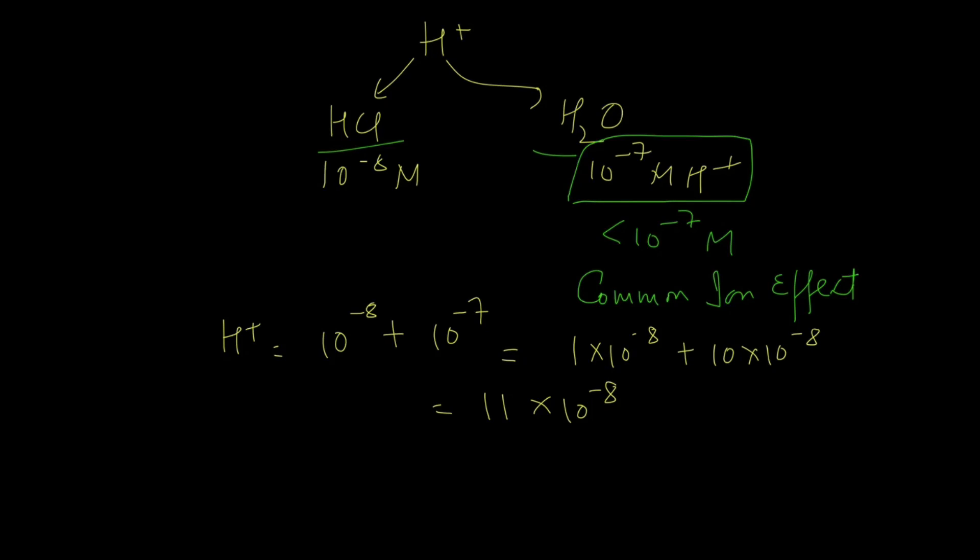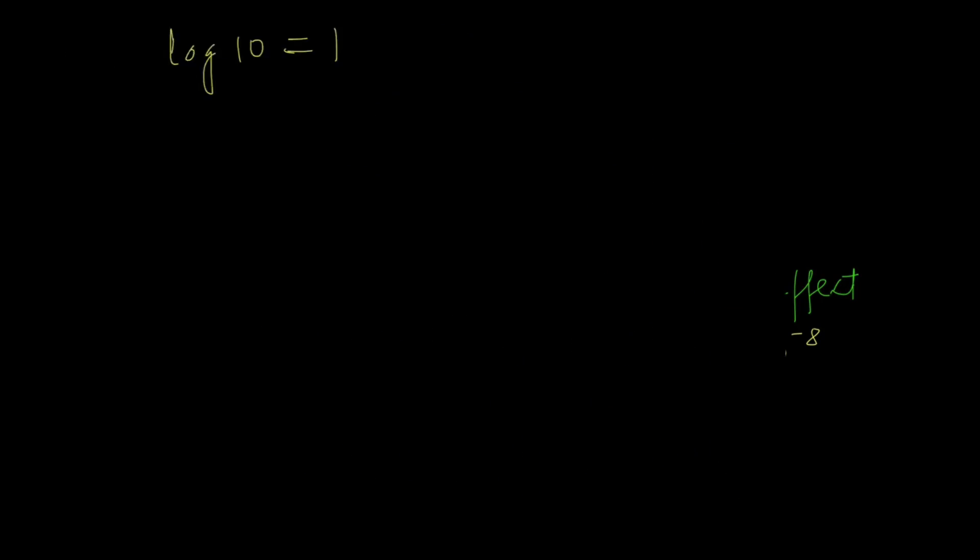Now we can put this into the formula and get pH is equal to negative log 11 into 10 to the power minus 8. And that gives us the value 8 minus log 11. Now we know that log 10 equals to 1. Therefore the value of log of 11 will be slightly greater than 1.